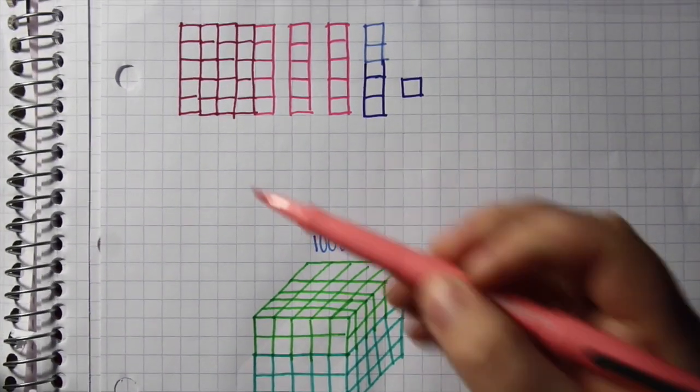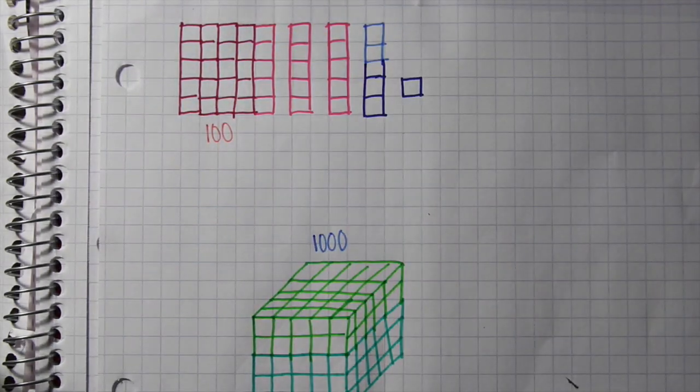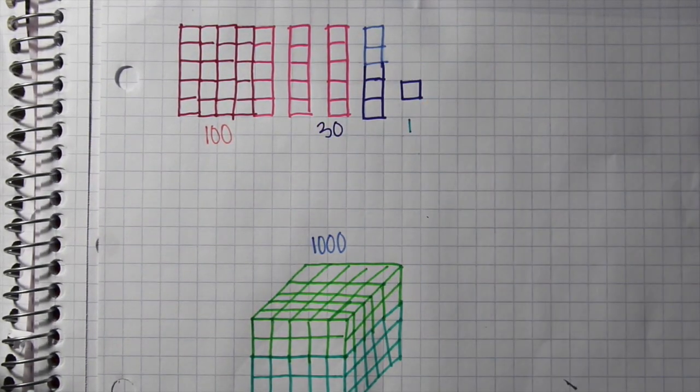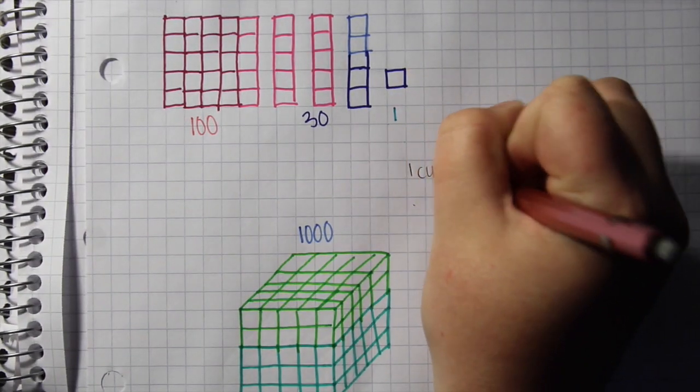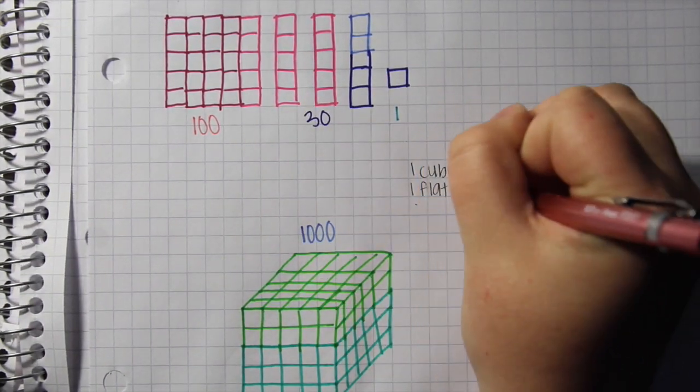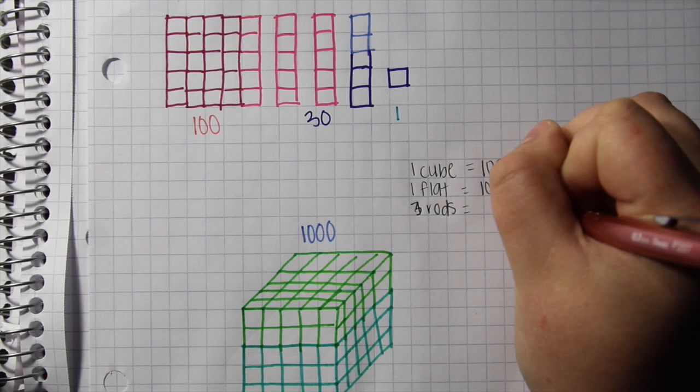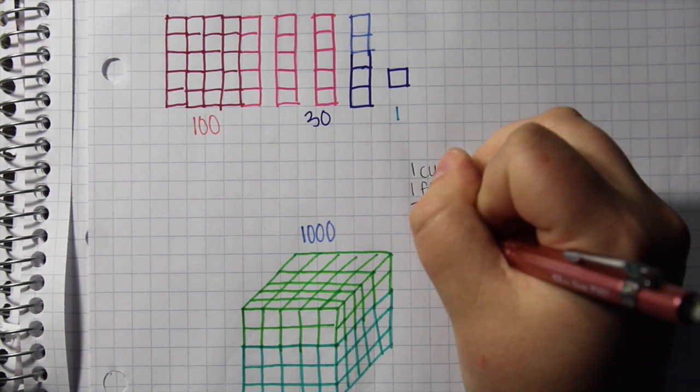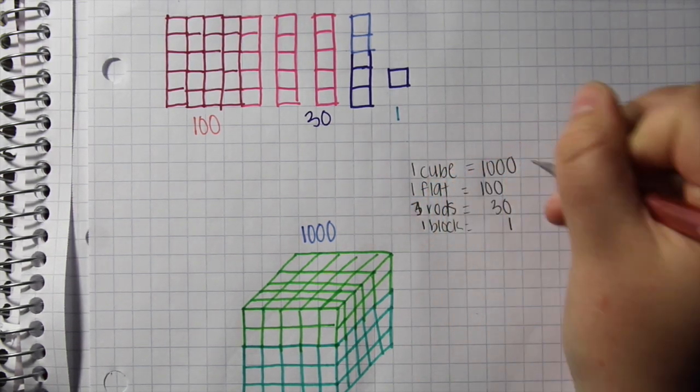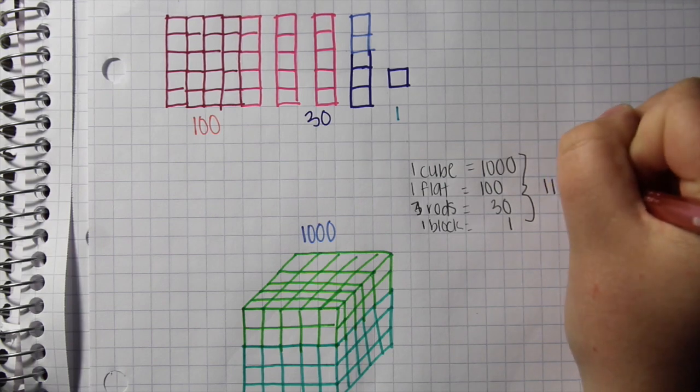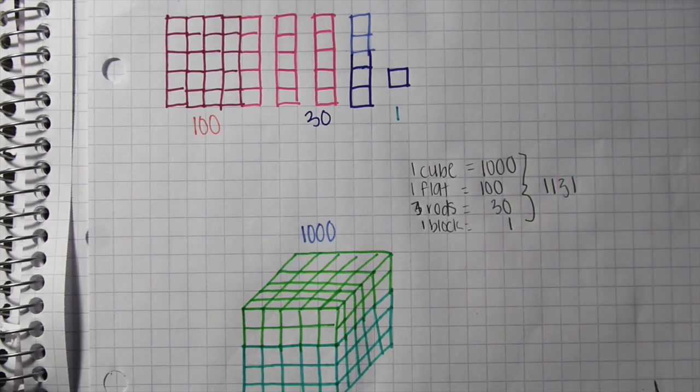So now finally we're going to put our values down. So this cube is 1000, the flat is going to be worth 100, and then the 3 rods will be worth 30, and the 1 block will be worth 1. All together, this adds up to 1131. So that's how we did the standard algorithm drawing with the base 5 blocks.